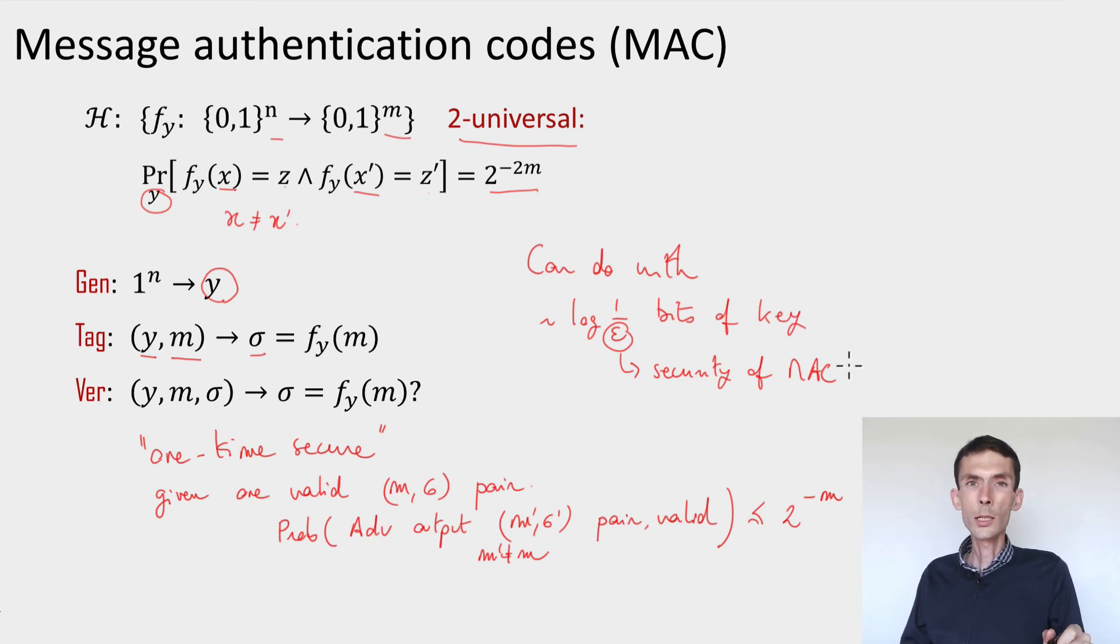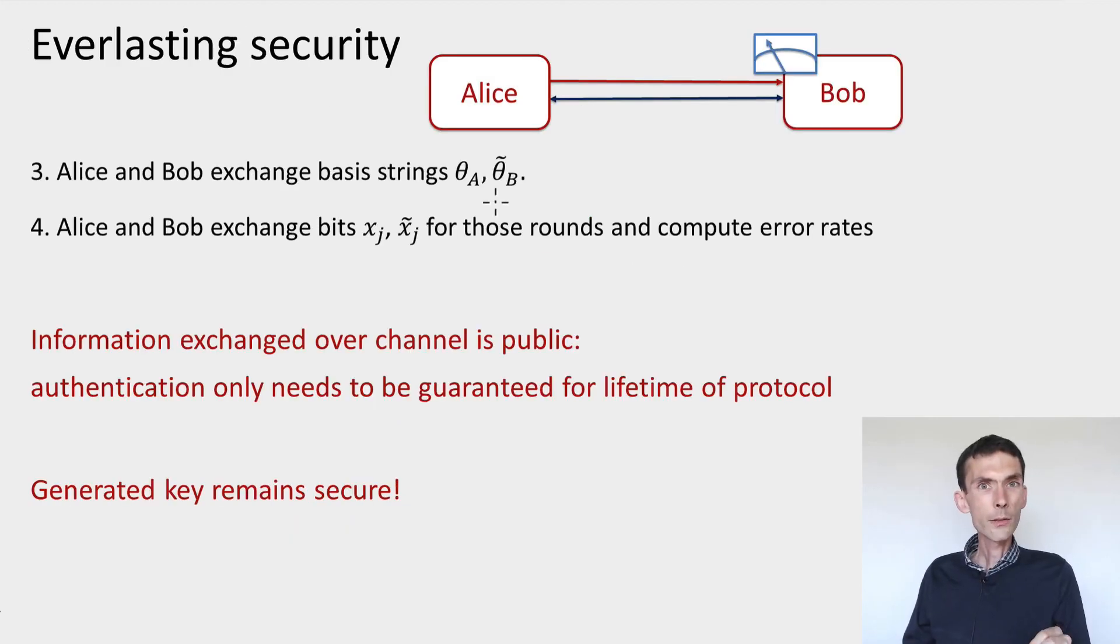But still, you need to have a secret key to start with. And so this is a limitation that I wanted to make you aware of, because it's a limitation of all the key distribution protocols that we know, you need a little bit of private key to get started. Now, why is this not too strong an assumption? First, there's the case that this key doesn't need to be too long. And then you can also make another argument, which is the following.